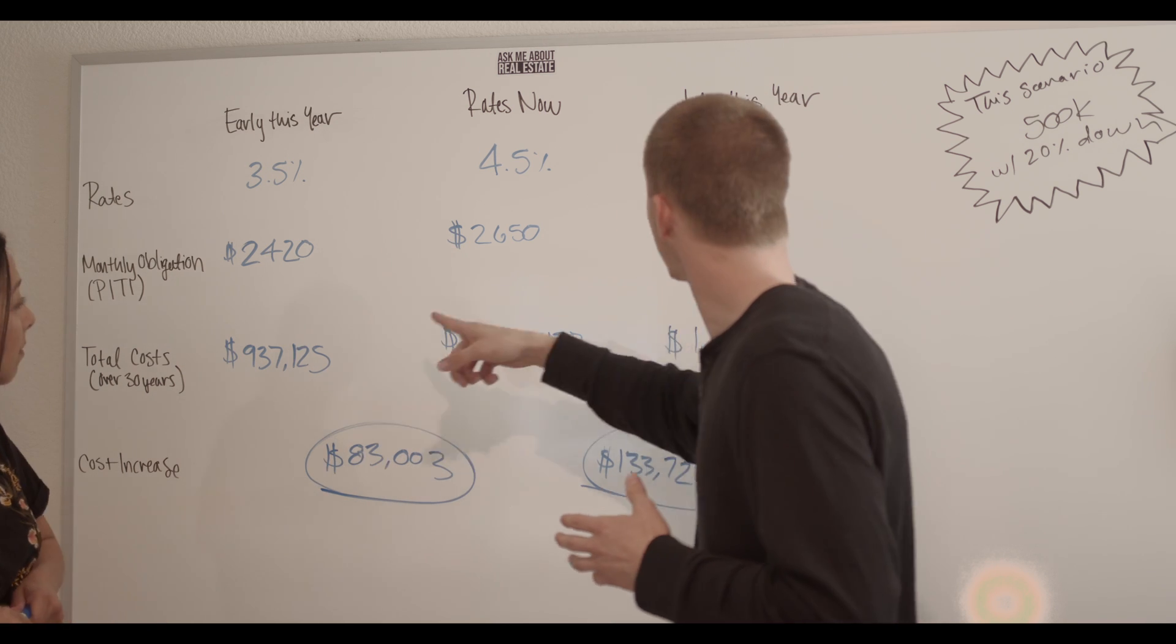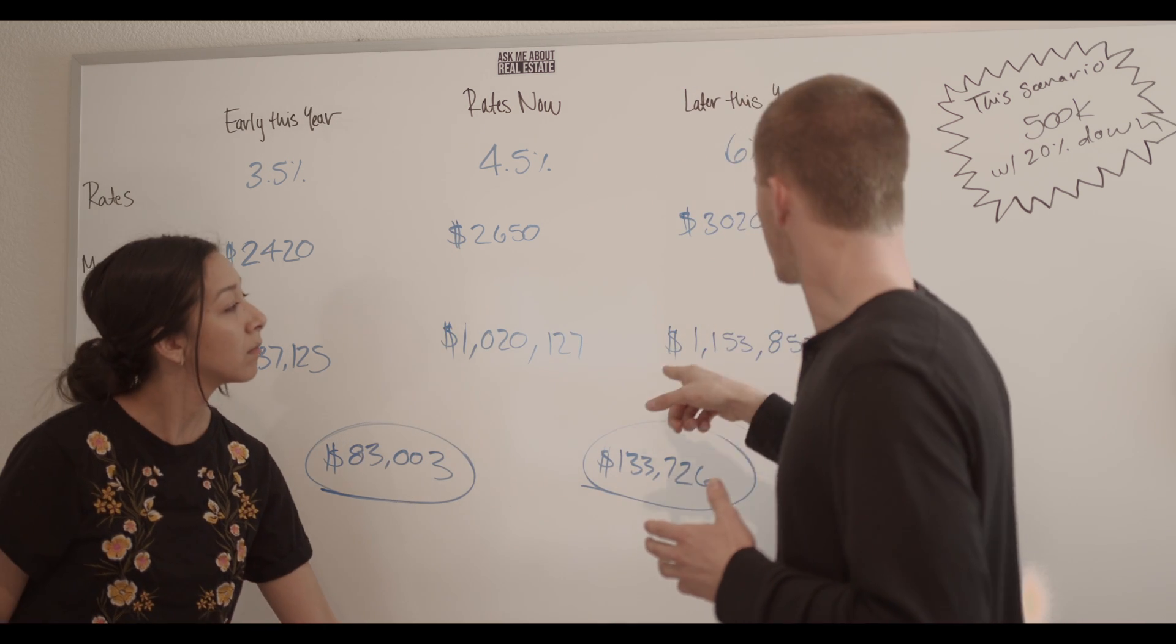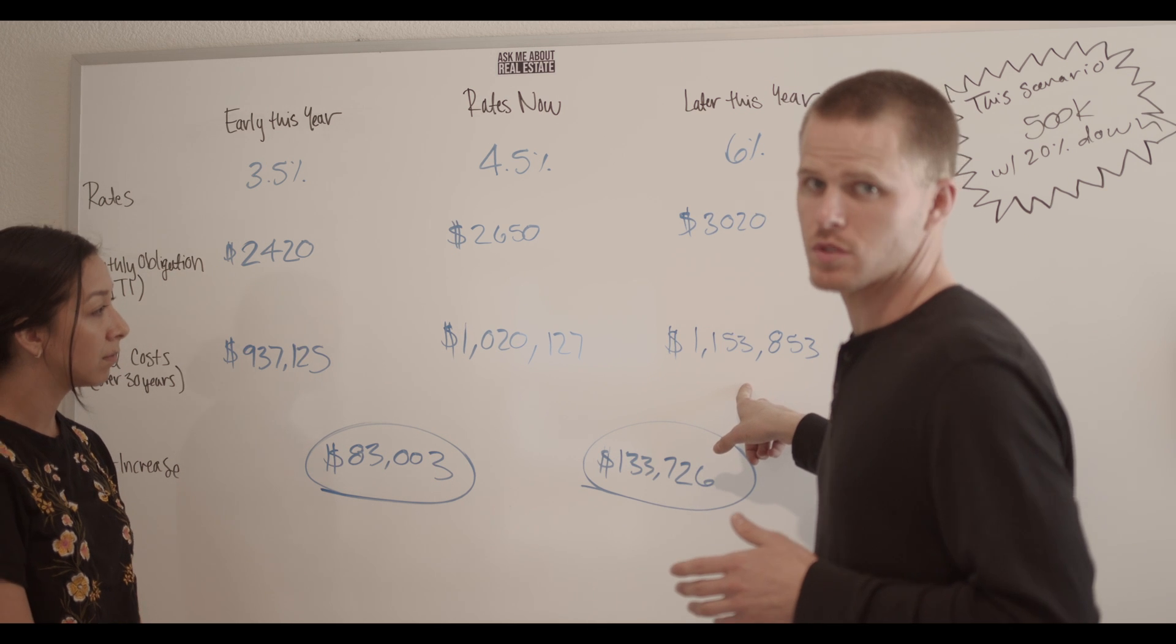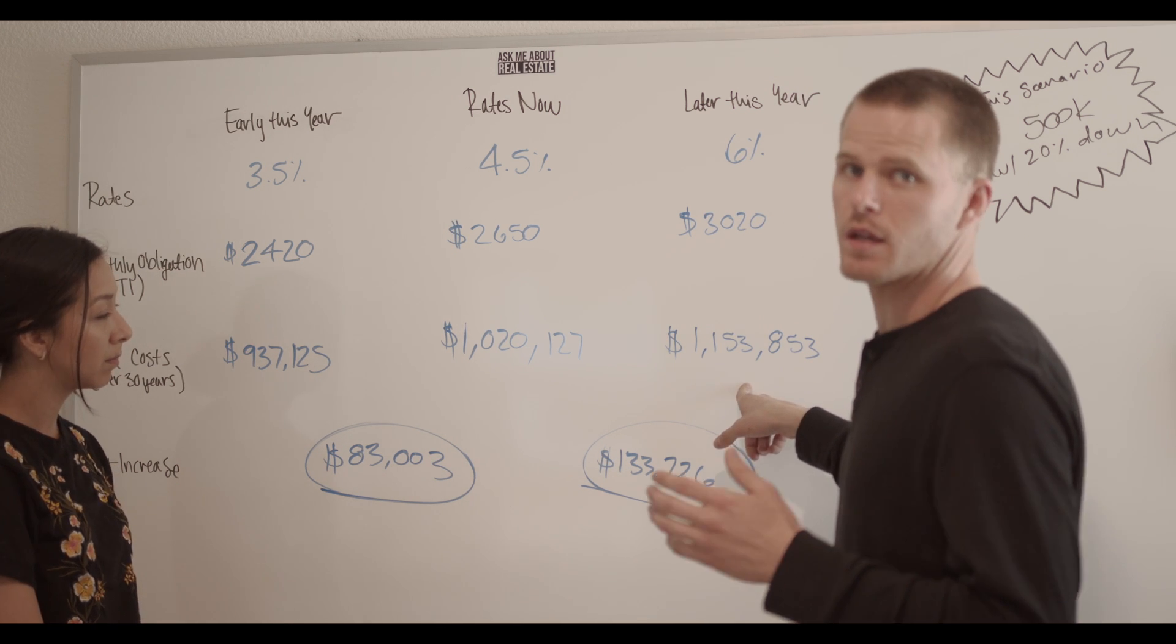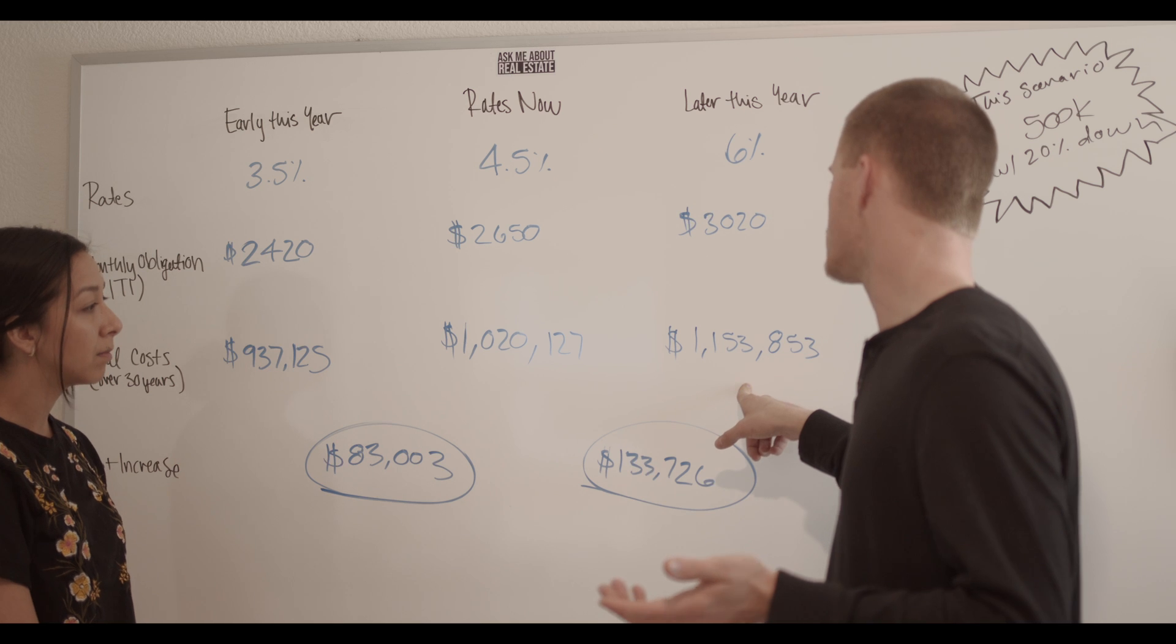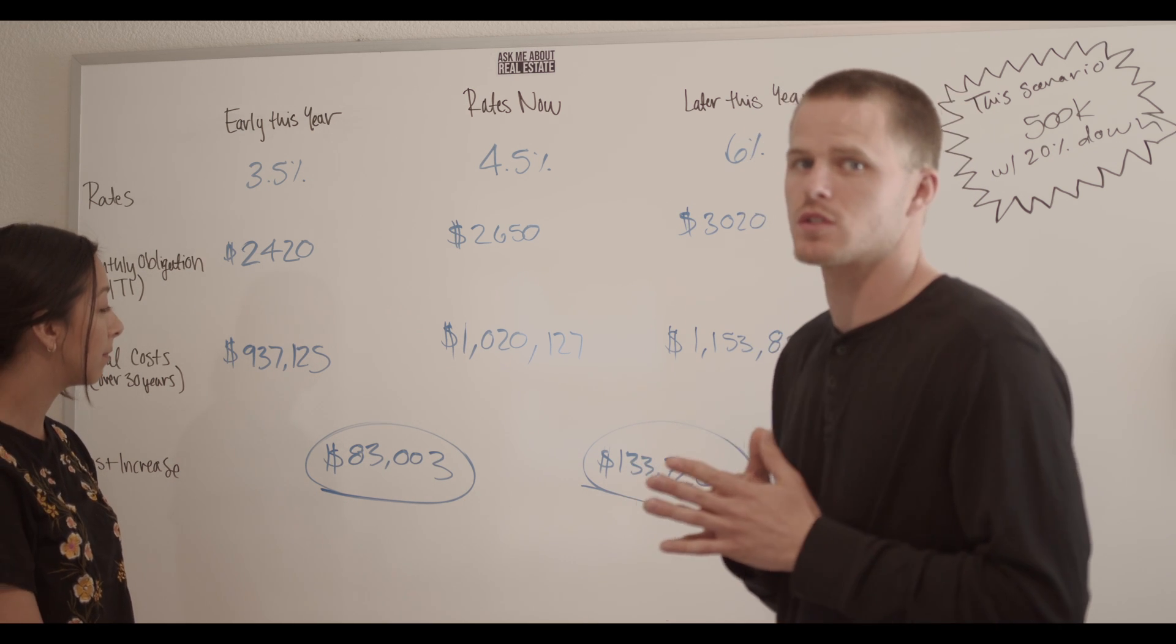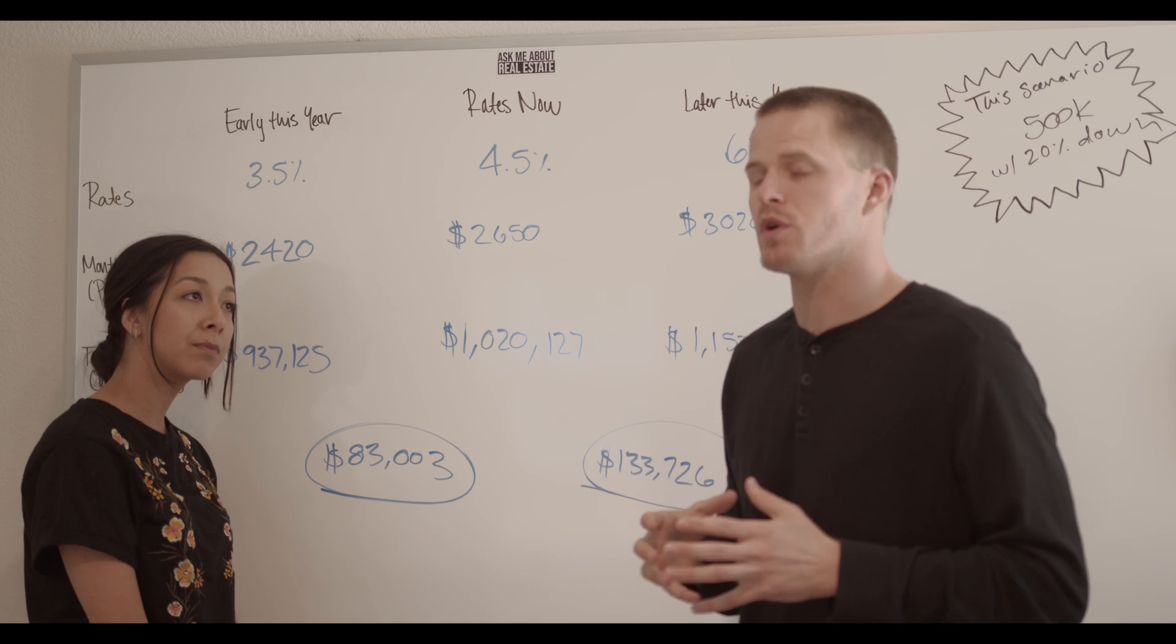You can see that even if you jump to a 6% interest rate with the same price, you're almost paying $200,000 in interest on your mortgage. So that's a substantial difference if you're actually looking at the longevity in a 30-year period.